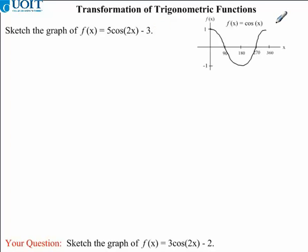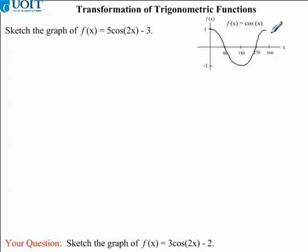We should all be familiar with this graph by now. It has a maximum value of 1, a minimum value of negative 1, and x-intercepts at 90 and 270 degrees. Now from this graph, we're going to apply our various transformations.